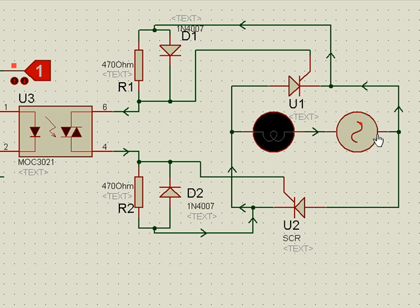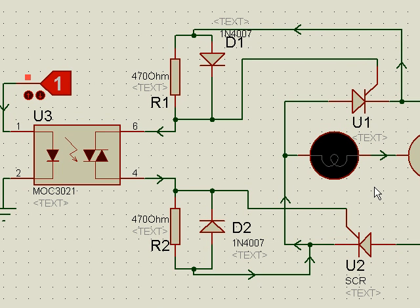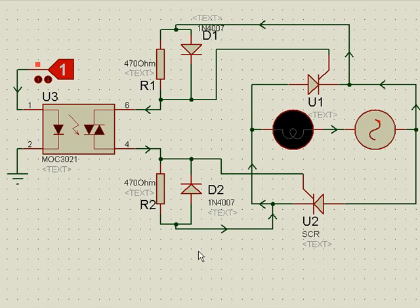That means the main supply will now flow from here, through the circuit, through the load, and back. Initially it was not able to flow, but now because the gate has been triggered, it flows. All these simulations have been shown at a very low frequency for the purpose of understanding, as it would actually happen at a very high frequency. The simulation is operating half cycle this side, half cycle this side.